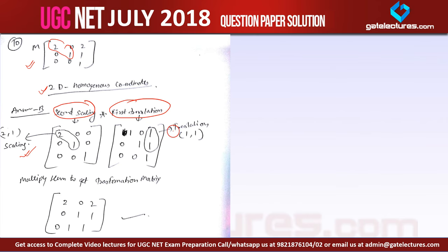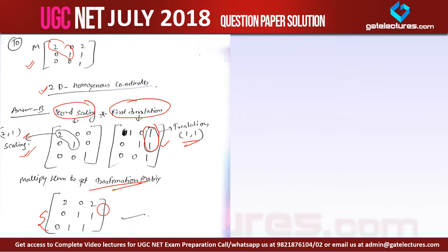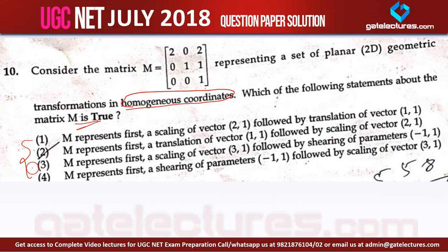This part is including translation. Here you can see this is translation which is (1,1) and scaling is (2,1). Multiply them to get the transformed matrix which is given by this. The answer to this question is option number 2, which is the correct answer to this given question.